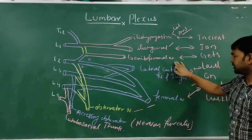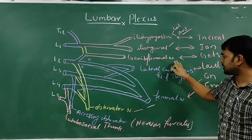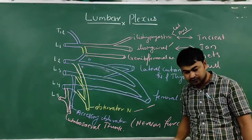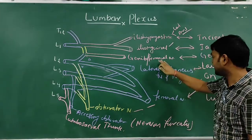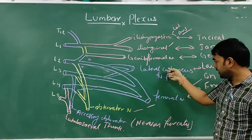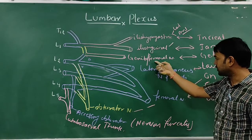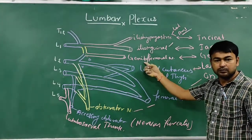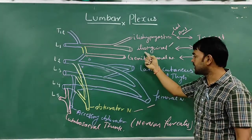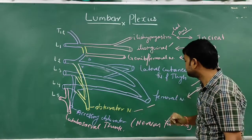The iliohypogastric nerve supplies the skin over the upper and medial part of the thigh, the scrotum, root of the penis in male, mons pubis, and labia majora in female. The genitofemoral nerve gives two branches: the genital branch and the femoral branch.